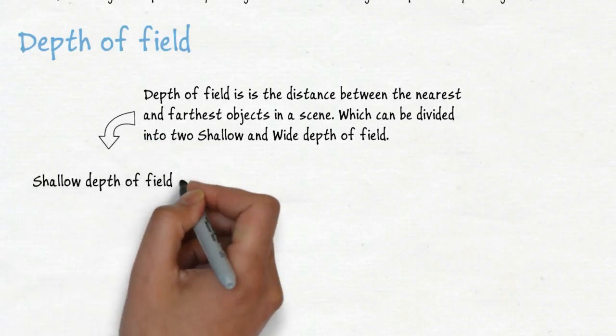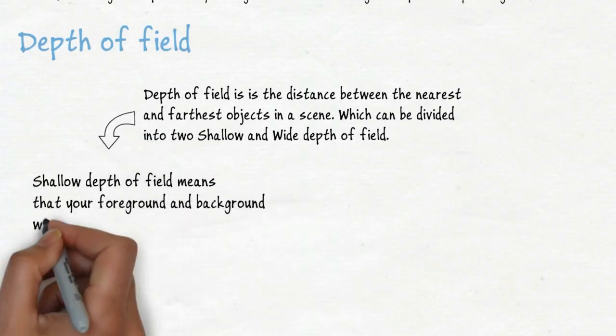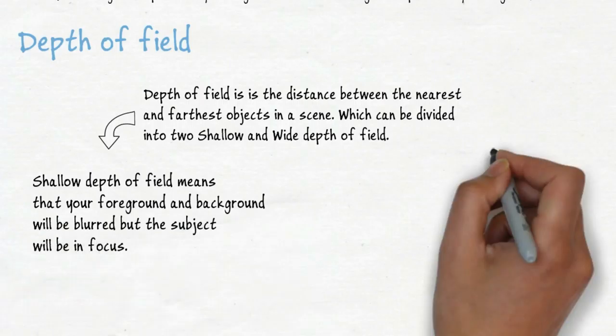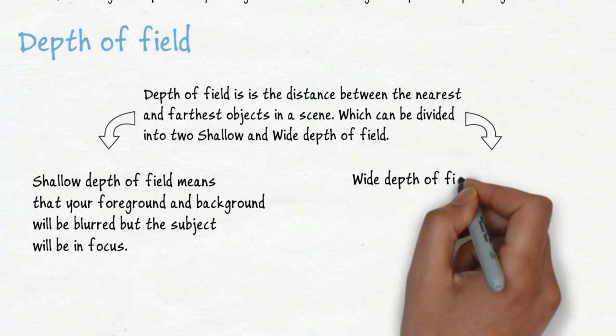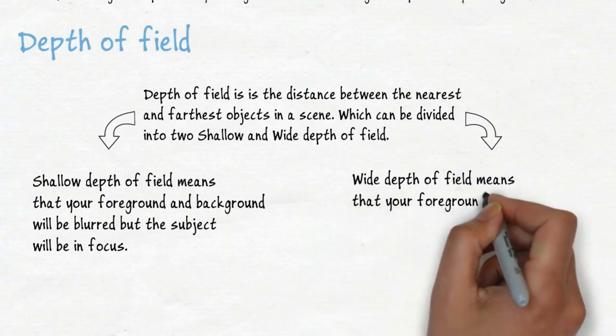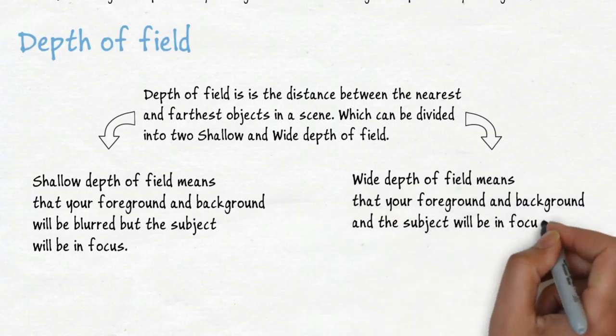Shallow depth of field means that your background will be blurred, but the subject will be in focus. Wide depth of field means that background and the subject will be in focus, so nothing will be blurred.